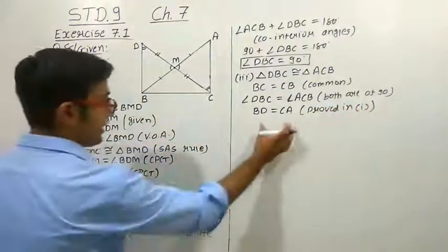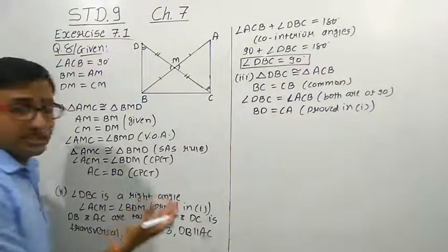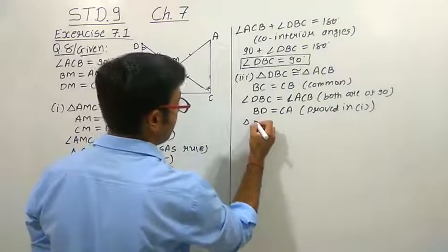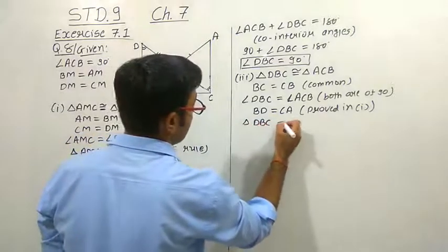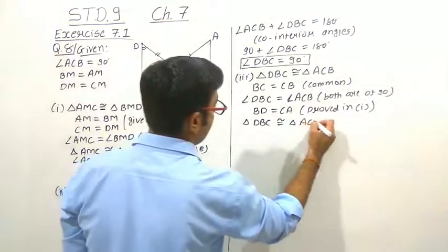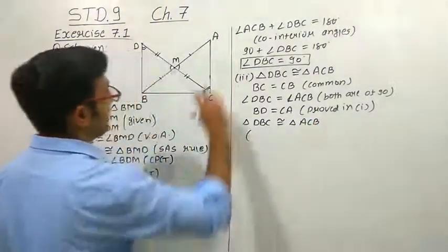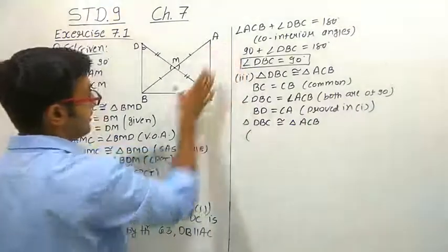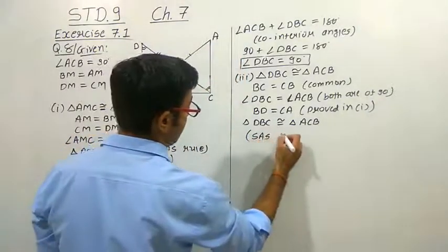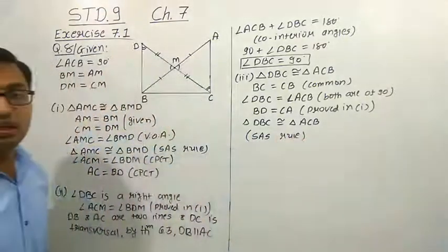So three conditions are established: BC is common (side), angle DBC equals angle ACB (angle, both 90°), and BD equals CA (side). Therefore by the Side-Angle-Side rule, triangle DBC is congruent to triangle ACB.